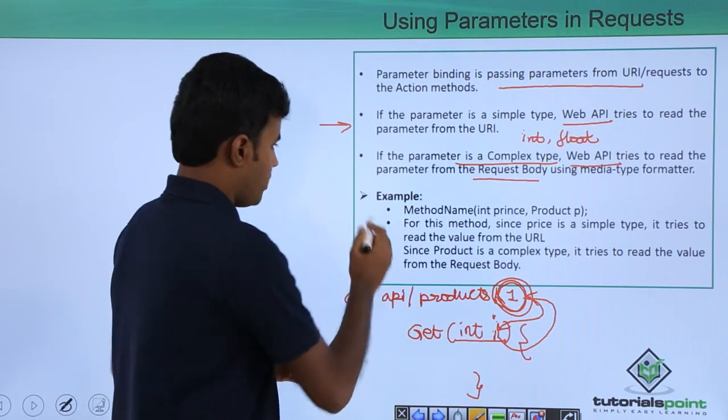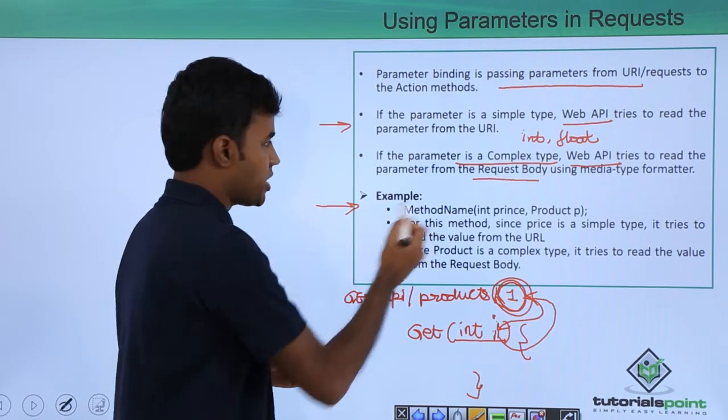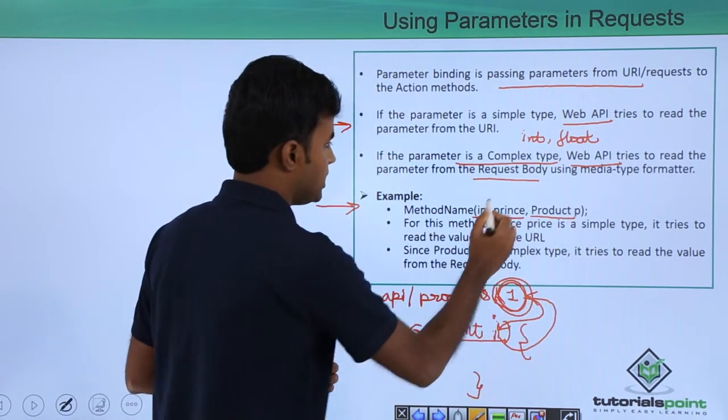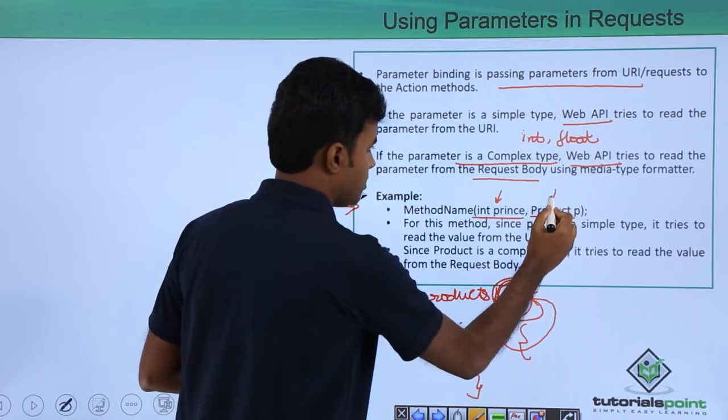We will see an example. For example, I have a method or action method with integer price and product p. This is a simple type and this is a complex type.